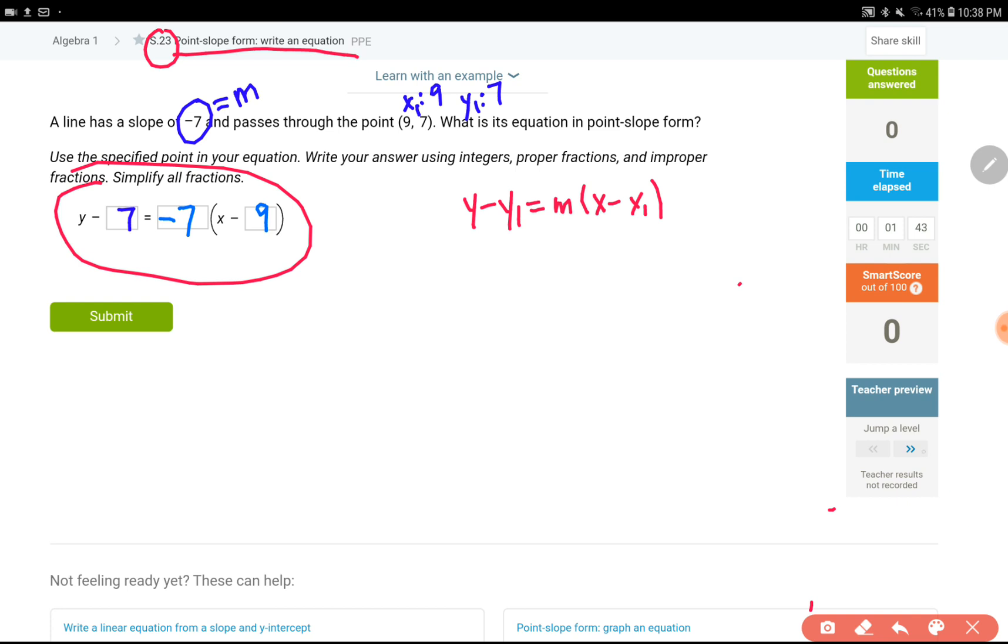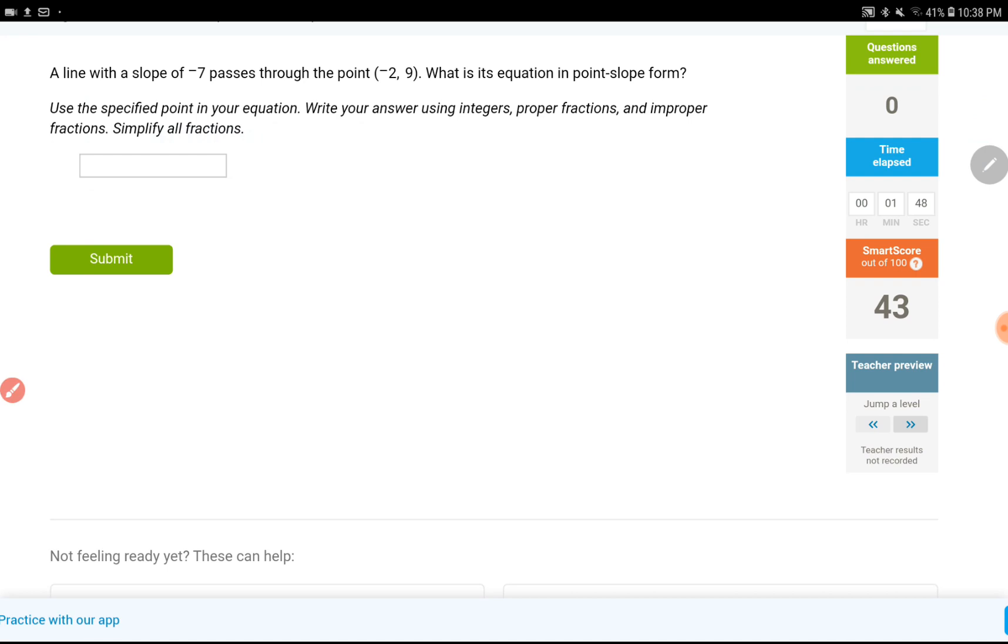So moving on to the next level. Okay, a line with a slope of negative 7.